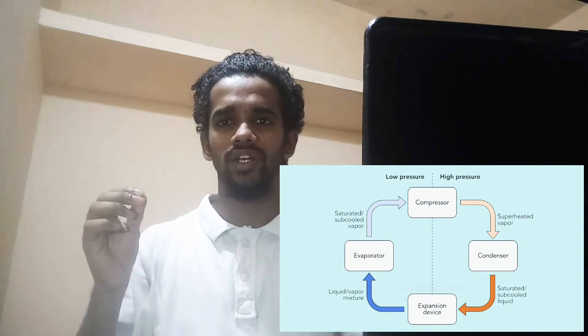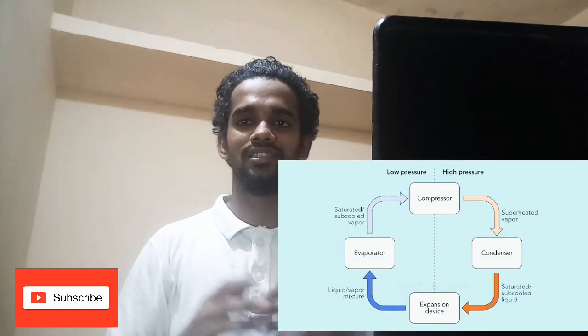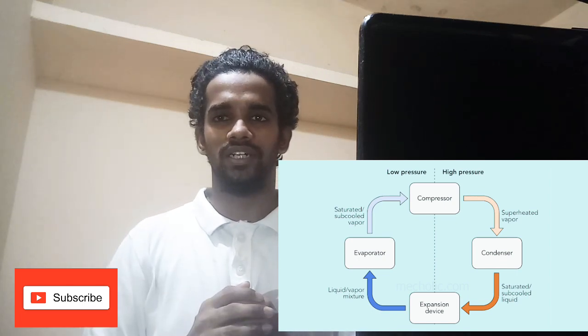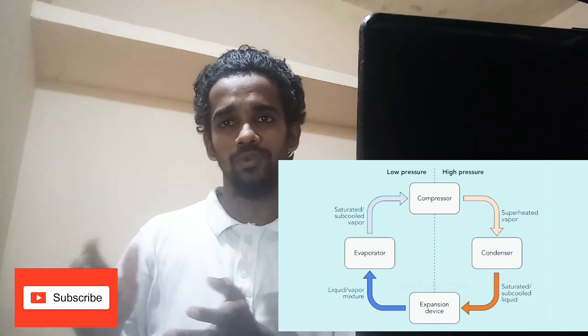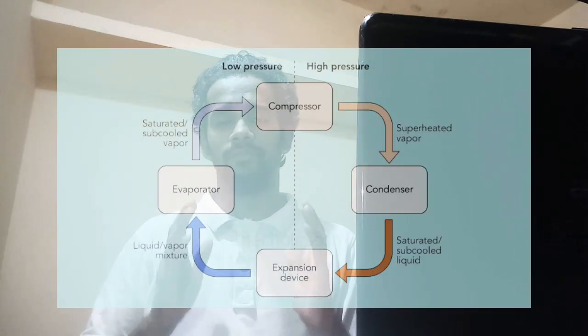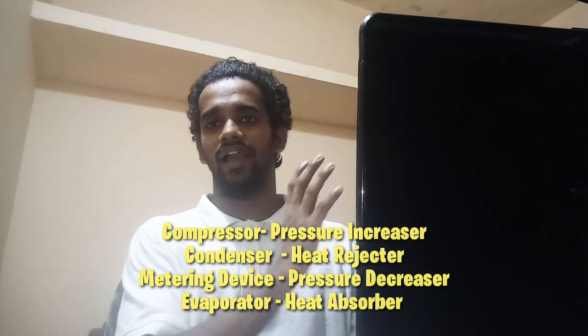Now talking about the evaporator: refrigerant entering the evaporator section will have a low saturation temperature, so the boiling point of that refrigerant will also be low. It receives the latent heat from that particular room or cabin and boils off. The liquid refrigerant boils to a superheated vaporized form and is sucked into the compressor, where the pressure of the refrigerant is increased, and so is the saturation temperature. From the compressor, the vaporized refrigerant with high saturation temperature and high pressure comes to the condenser, where it condenses to a liquid form and is subcooled to a temperature below that of the seawater or air. This is how the refrigerant cycle works: compressor, condenser, metering device or expansion valve, and evaporator — that is, pressure increaser, heat rejecter, pressure dropper, and heat absorber.